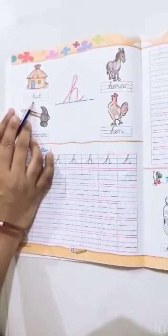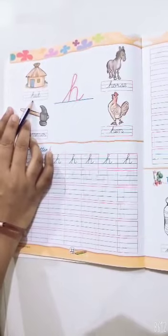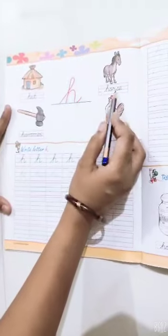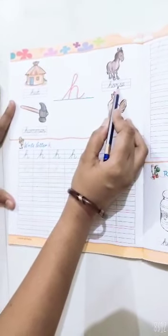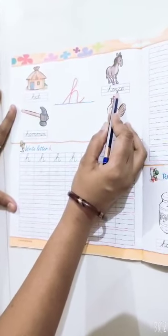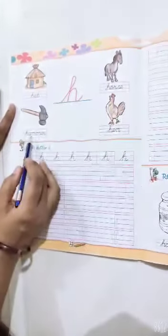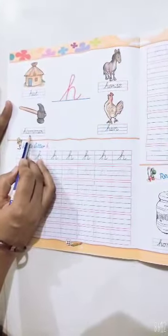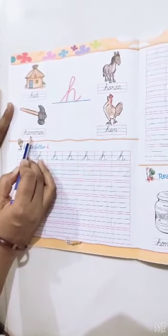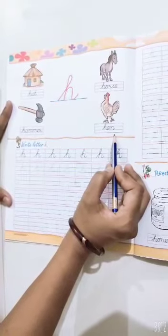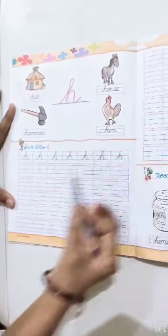What is this? This is hut. What is this? This is horse. Horse means ghora. Now what is this? This is hammer. Hammer means thora. Now what is this? This is hand.